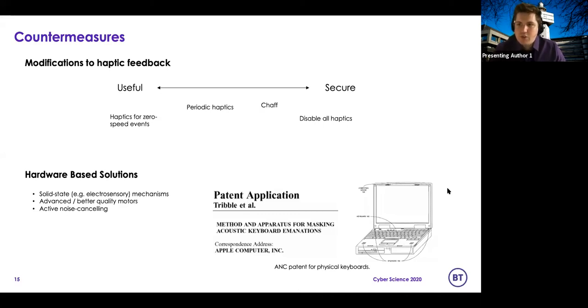Then we can get more secure. Chaff, for example. So introducing entirely spurious haptic feedback that generates noise and prevents you from discerning what's real from what's completely fake. Great for security, but not so useful to the user because they won't necessarily correspond to when they're touching. They may think their phone's been pocket dialed. Disabling all haptics would be more secure, but doesn't give you that useful feedback because haptics are useful. So there's some trade-off there that needs to be considered.